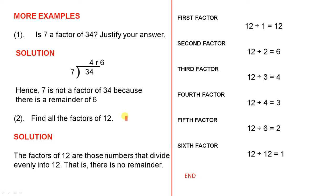Find all the factors of 12. Solution: the factors of 12 are those numbers that divide evenly into 12 — that is, there is no remainder. The first factor: 12 divided by 1 equals 12, so the first factor is 1.